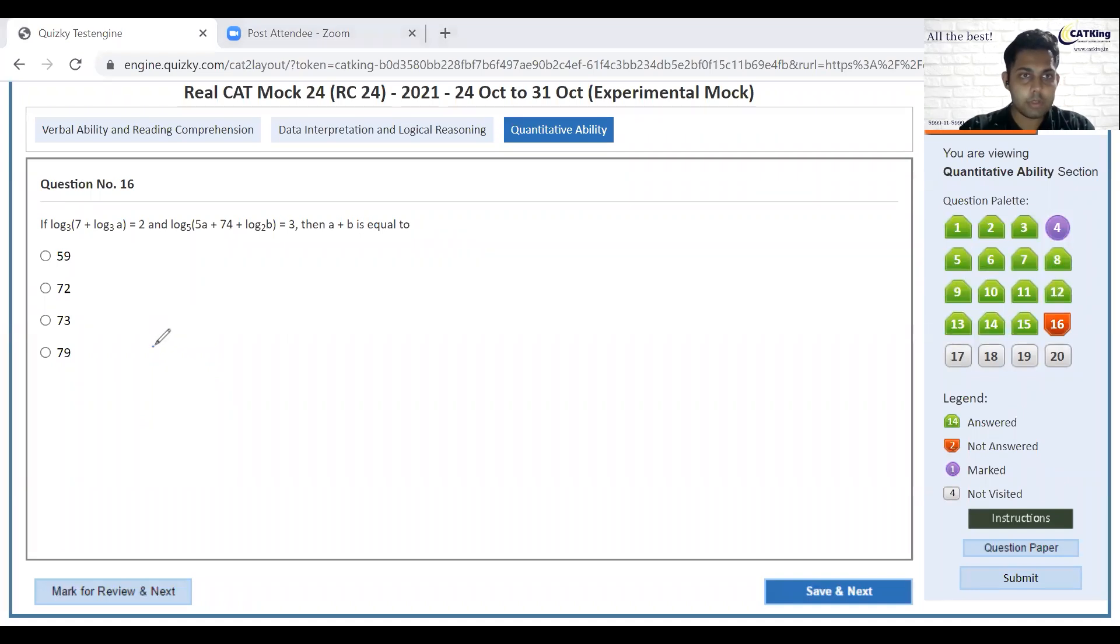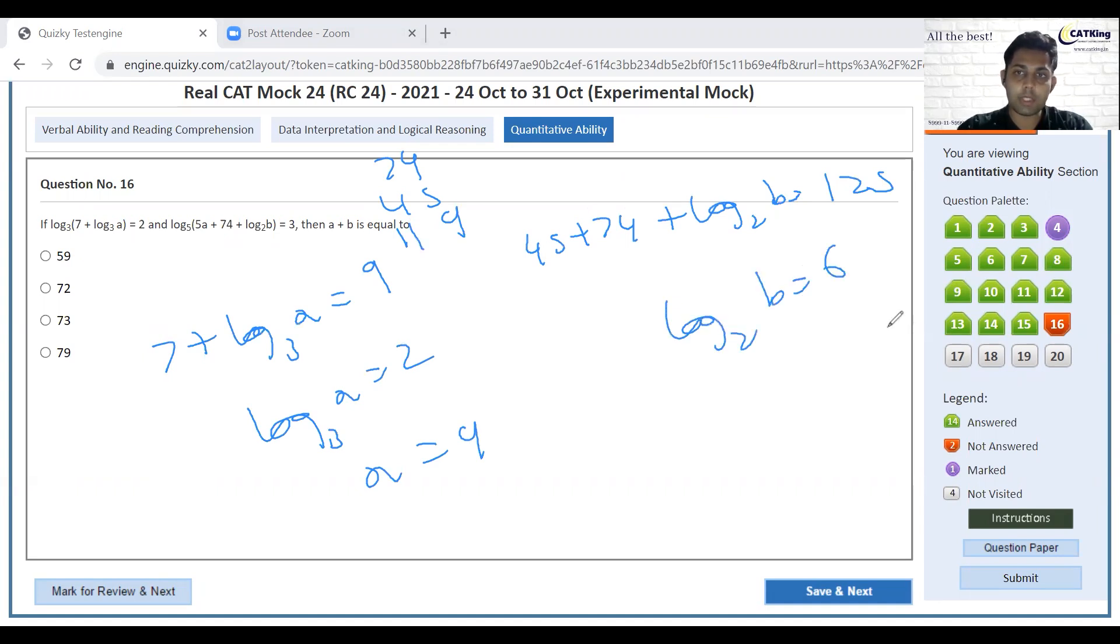This is simple. 7 plus log 3a equals 9, log 3a equals 2, a equals 9. 45 plus 74 plus log 2b equals 125. 74, 45, 5, 4, 9, 7, 8, 9, 11 equals 6. Log 2b equals 6, b equals 2 to the power 6, 64. 64 plus 9 equals 73, great.